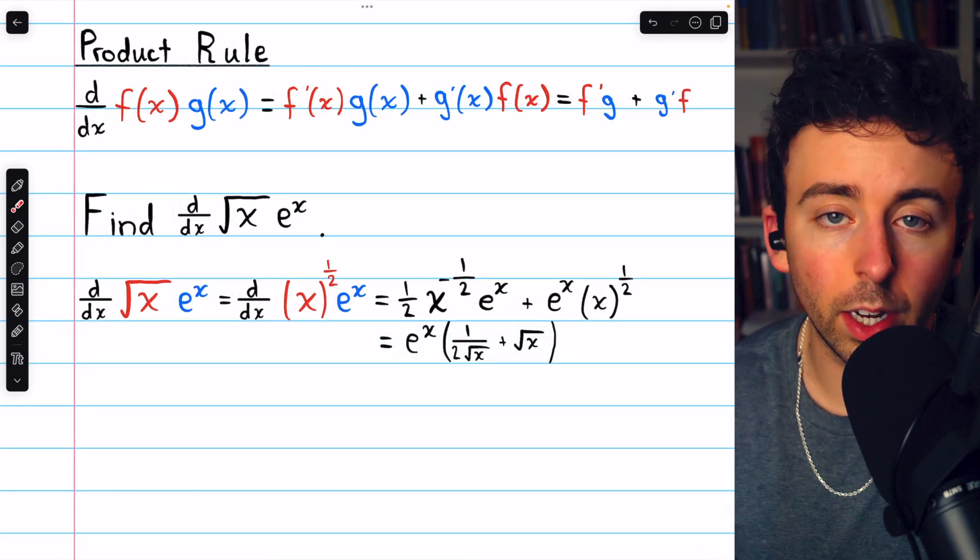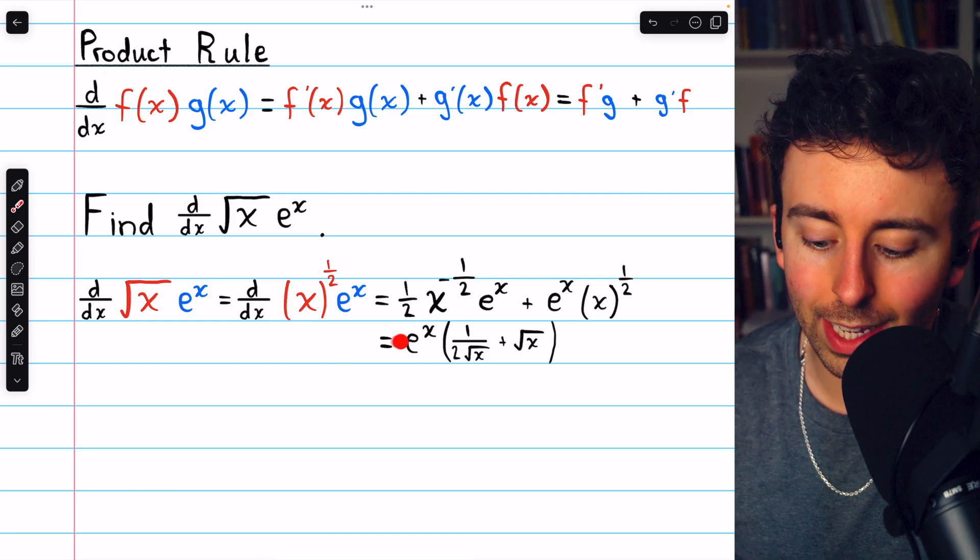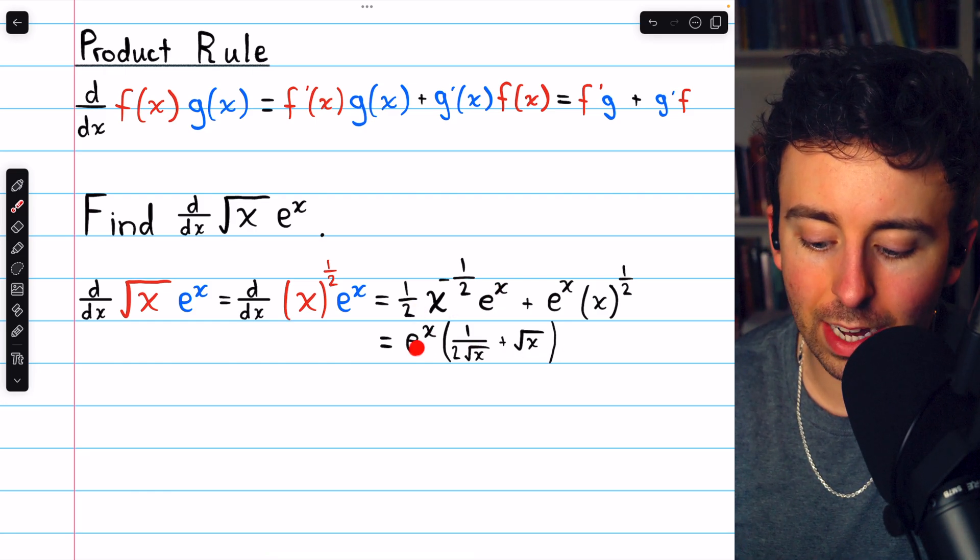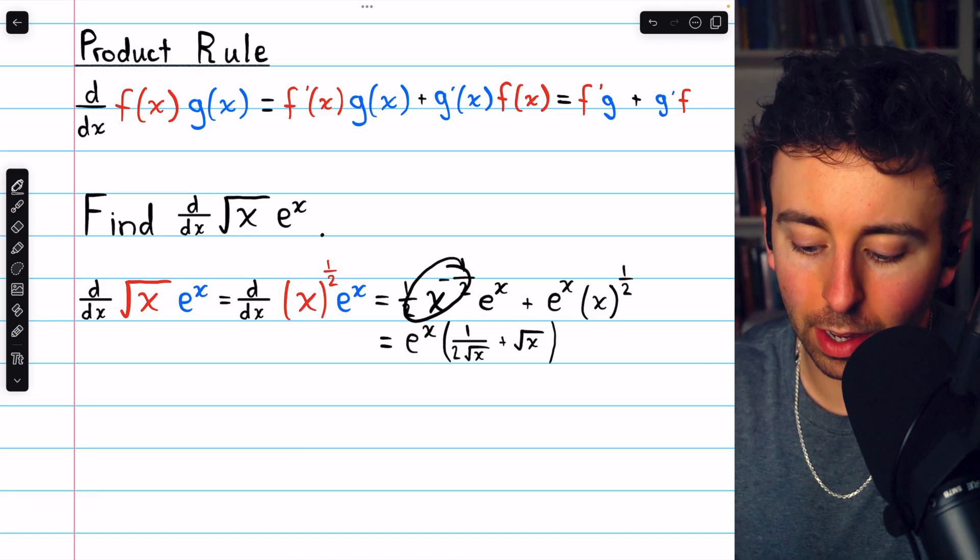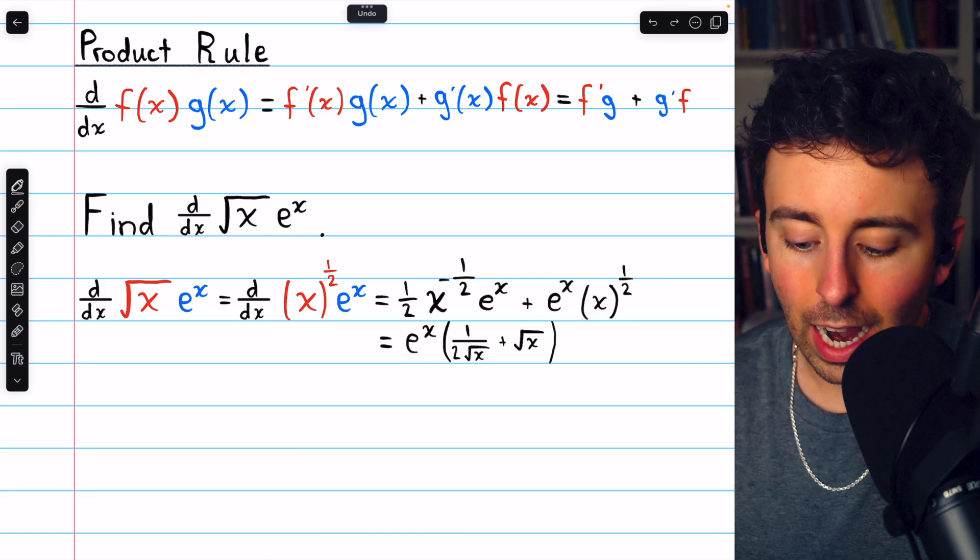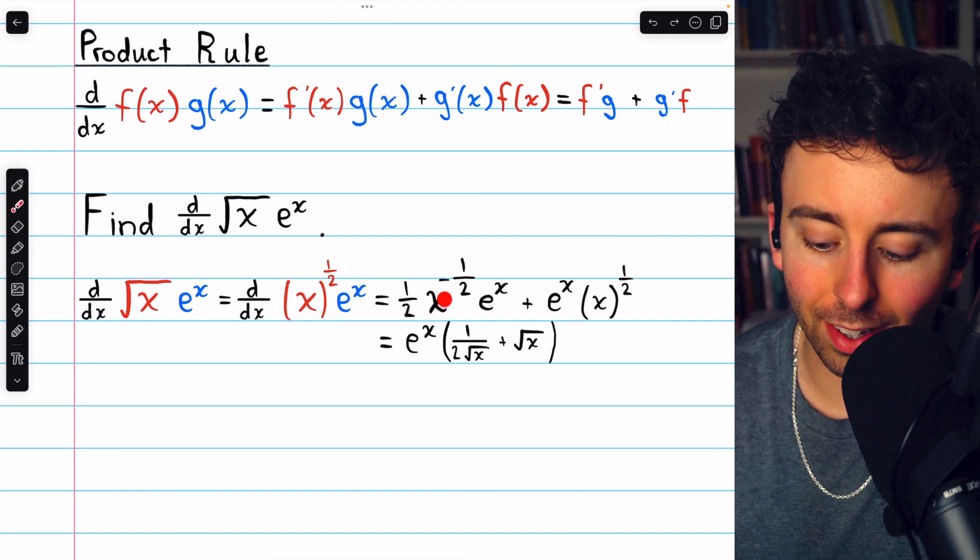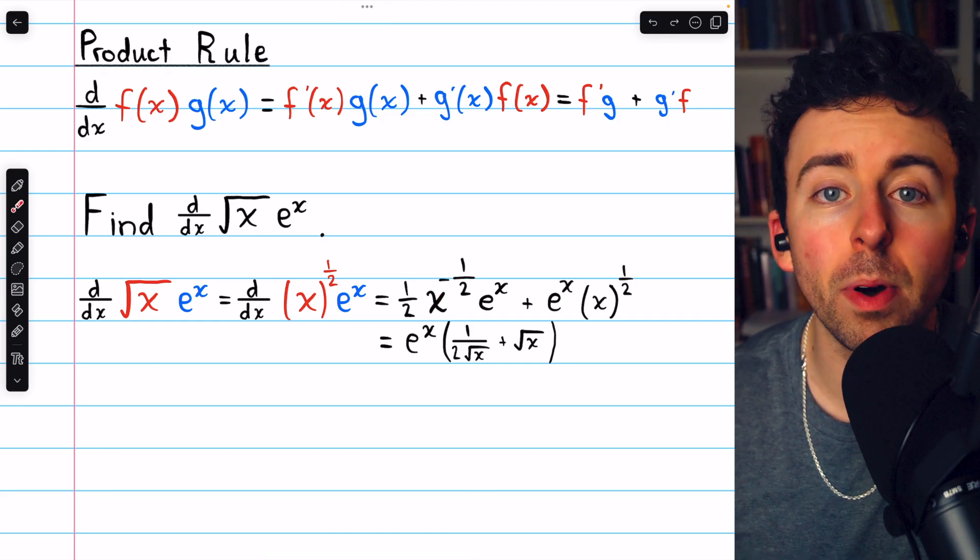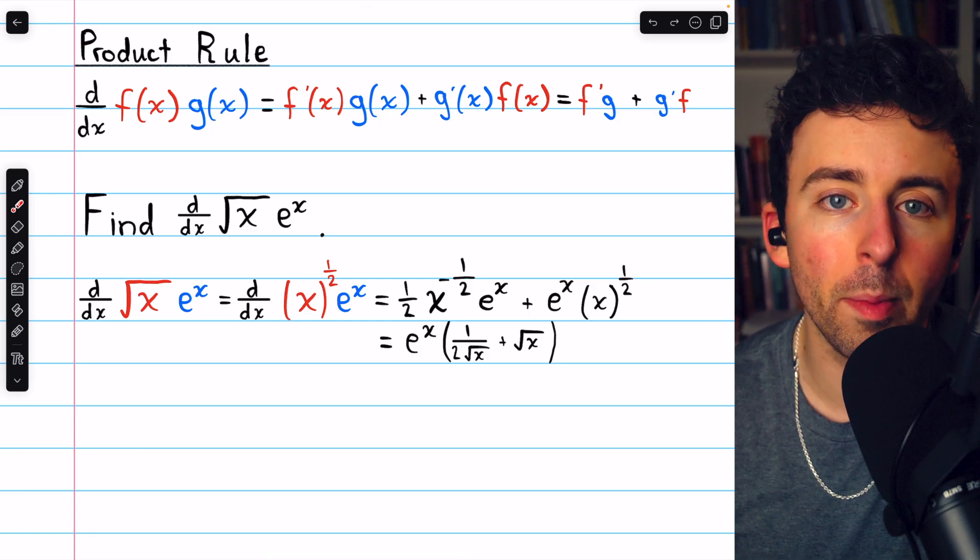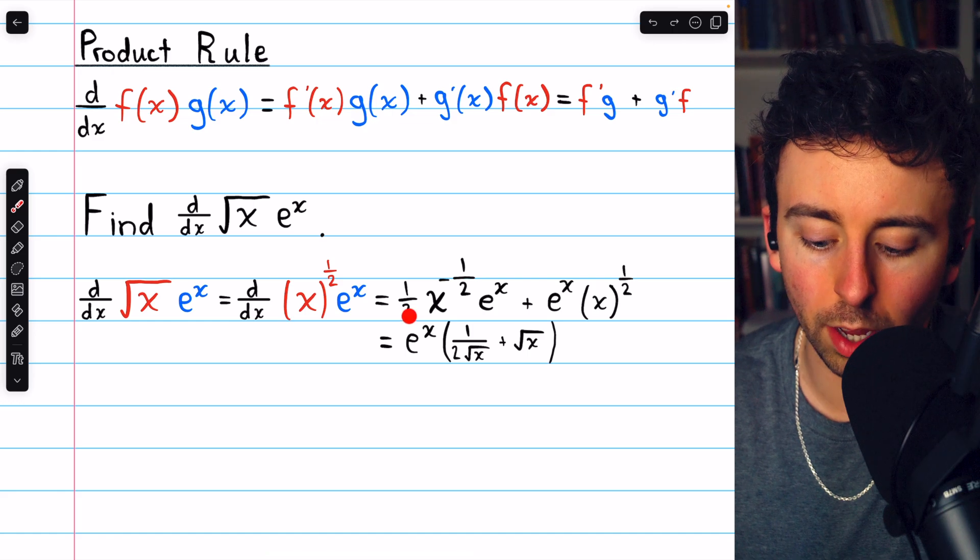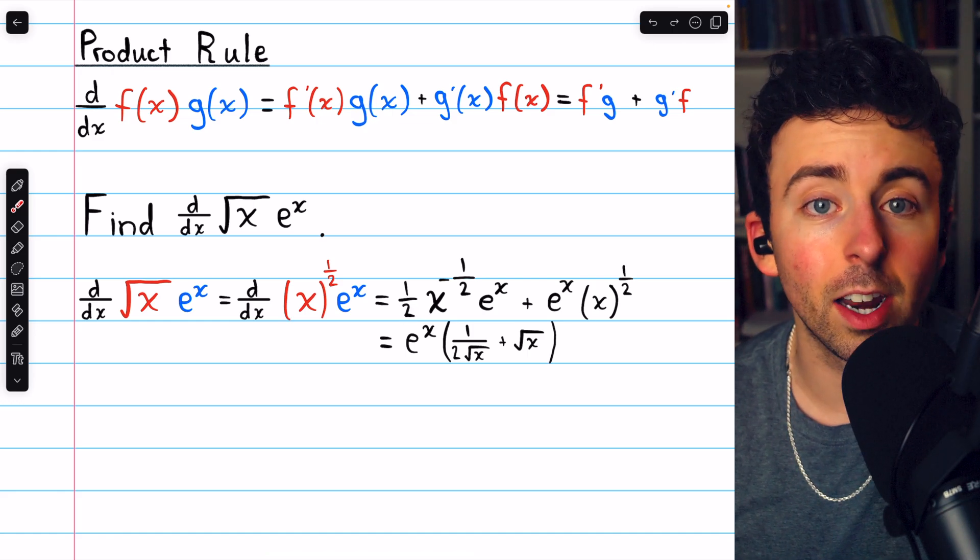This answer is fine, though if you prefer, you could write it like this. We factor out the e to the x, so it's just e to the x multiplied by this plus this, and then rewrite the negative power as a square root. So x to the negative half would become x to the positive half if we moved it to the denominator, and a positive half power is the same as a square root. We also still have that two in the denominator.